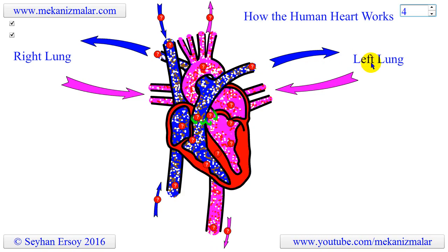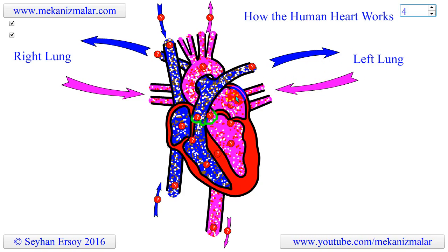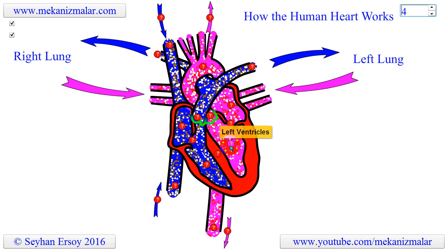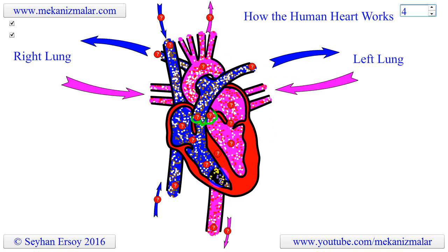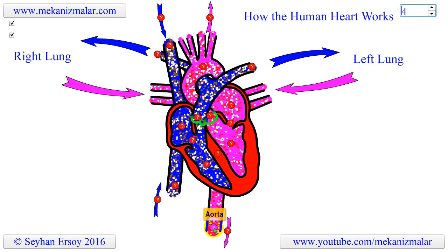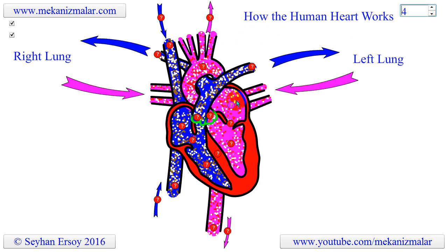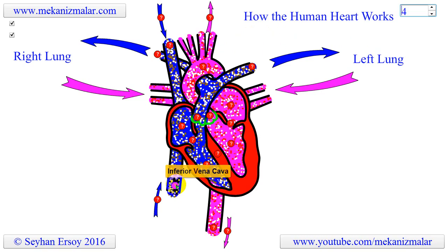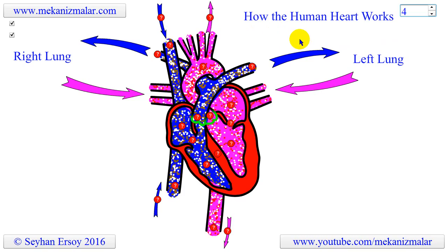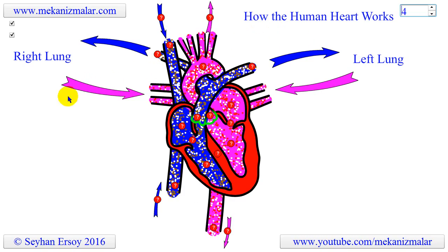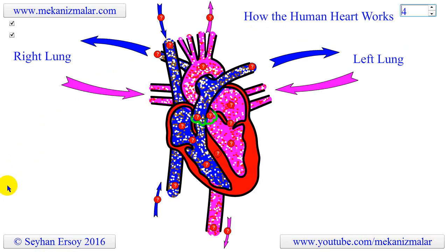The pulmonary artery carries blood from the right side of the heart to the lungs to pick up a fresh supply of oxygen. The aorta is the main artery that carries oxygen-rich blood from the left side of the heart to the body. The coronary arteries are other important arteries attached to the heart; they carry oxygen-rich blood from the aorta to the heart muscle, which must have its own blood supply to function. In this animation, the coronary arteries are not shown.